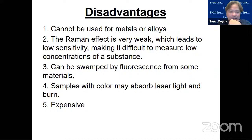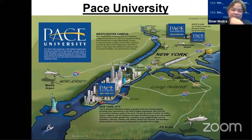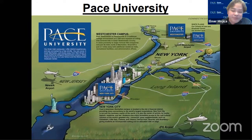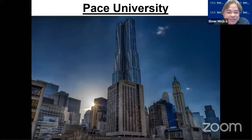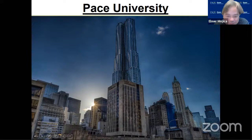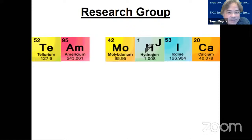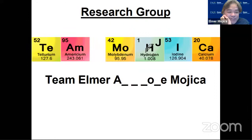I'm at Pace University — a private non-sectarian university in New York City, with a campus near Westchester. You can easily see our university standing on the Brooklyn Bridge, near City Hall, Wall Street, and the former World Trade Center. I have an active research group made up of almost all undergraduate students, and we always call ourselves 'The Team.' The acronym stands for Team Elmer — T-E-A-M, O-E-Mojica. If students like me, it's awesome, and if they don't, there's also a seven-letter word with A, O, and E.